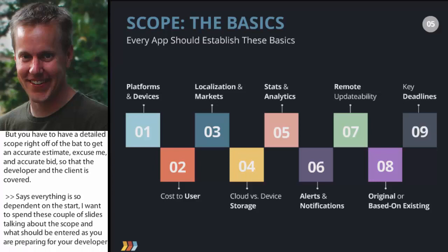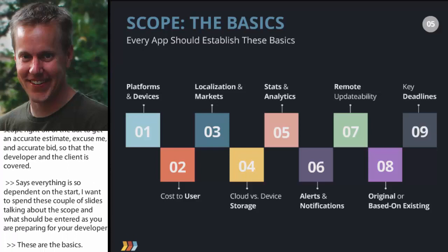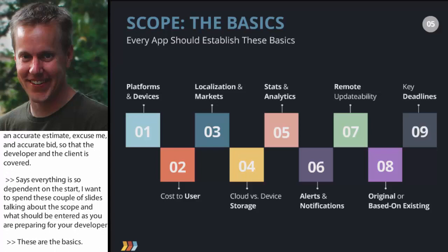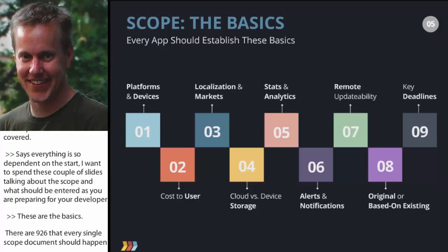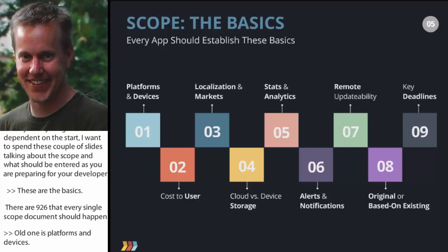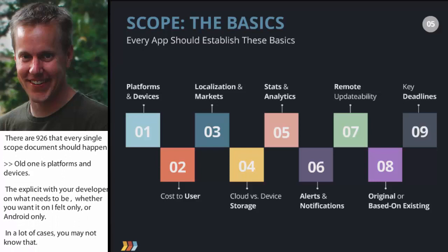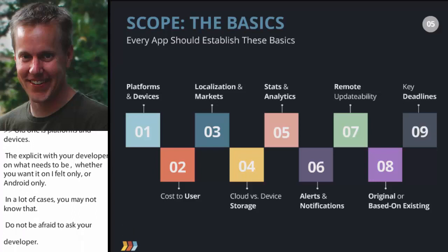There are about nine basics that every scope document should have. Number one is platforms and devices — be very explicit about whether you want iPhone only, Android only, or iPad as well. If you're not sure, ask your developer for multiple estimates. This is the one thing that affects cost more than any other part of the project — what platform and devices you want to target.